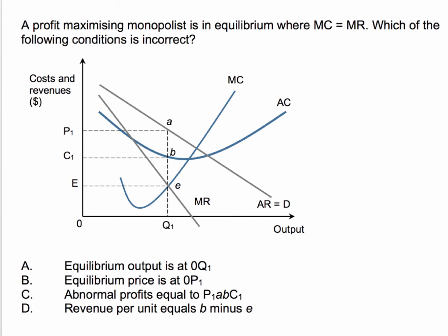Okay, so which of the following conditions is incorrect? The right answer to this is D — revenue per unit equals B minus C.